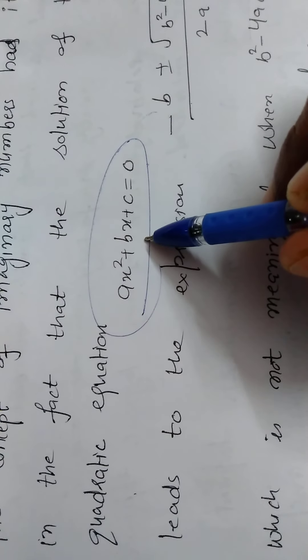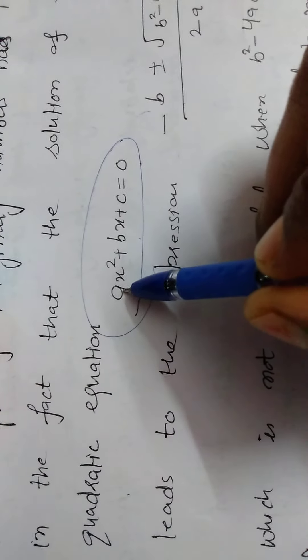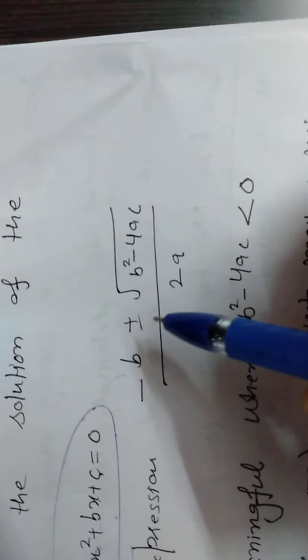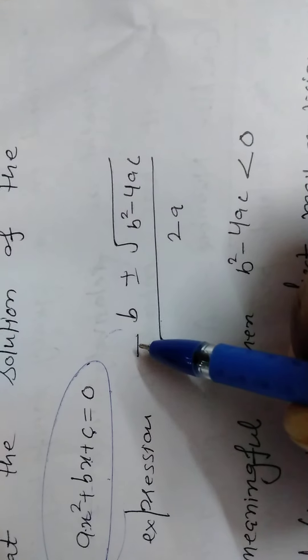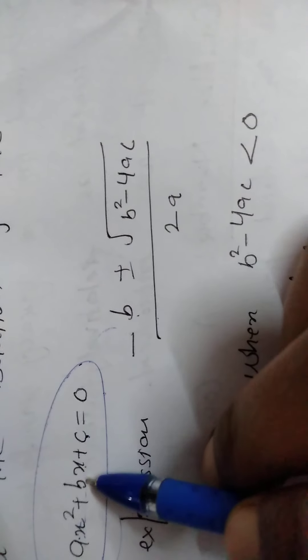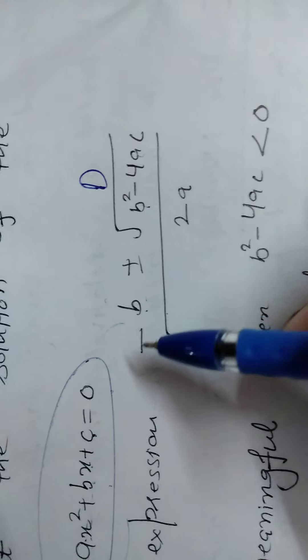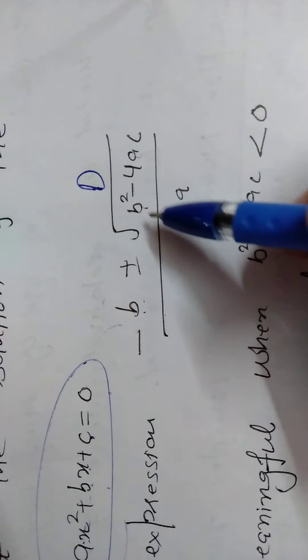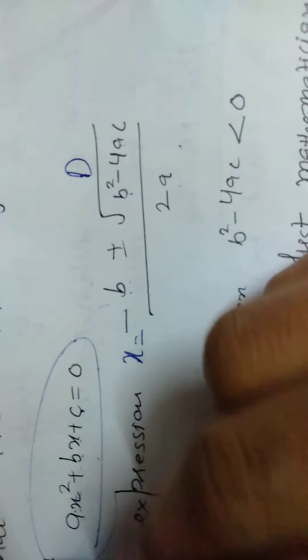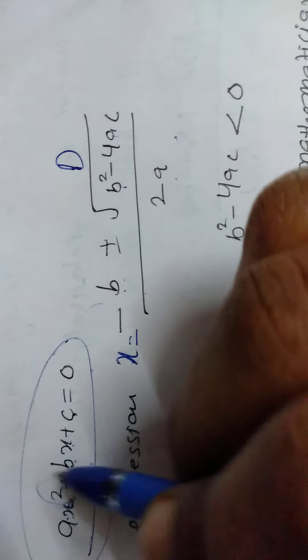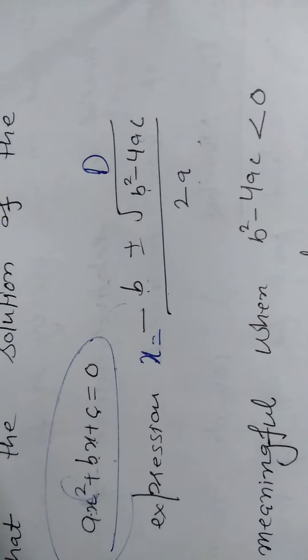We know that when a quadratic equation is given in the form of a variable x, we can always write its solution as: x equals minus b plus or minus the square root of b squared minus 4ac, divided by 2a. This is the value of x when the expression is quadratic, meaning the maximum power is 2.